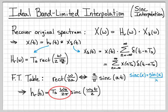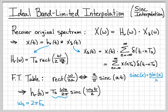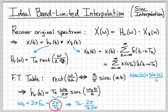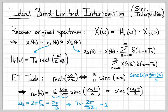We can simplify the scale factor out front: Ts·ωs/(2π). Since ωs = 2π·fs = 2π/Ts, substituting gives Ts·(2π/Ts)/(2π), and everything cancels — the Ts's cancel and the 2π's cancel — leaving just 1. So the scale factor is 1, and the impulse response simplifies to hr(t) = sinc(ωs·t/2).